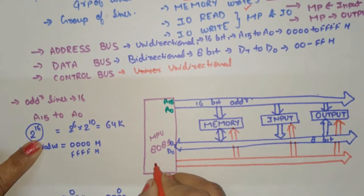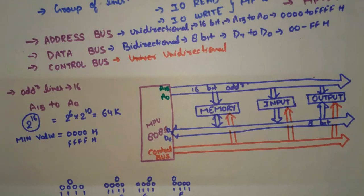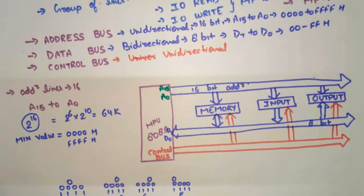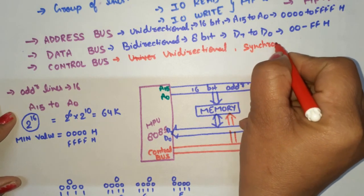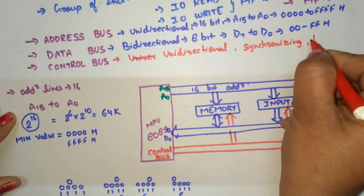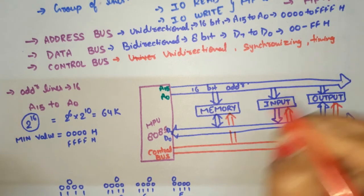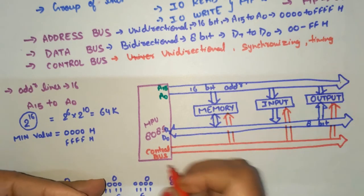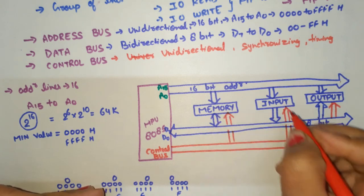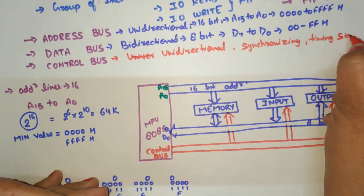This is the complete bus structure and bus architecture of 8085. The control bus is not a group of lines but single lines which carry signals to all devices. The control bus sends synchronizing signals and timing signals so that operations are synchronized and time-controlled. These signals go through the control bus to memory, input devices, and output devices.